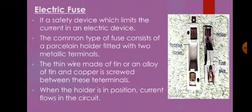Now we will start with the electric fuse. An electric fuse is a safety device which limits the current in an electric circuit. Here in the diagram I have shown a common type of electric fuse. It consists of a porcelain holder fitted with two metallic terminals. A thin wire made of tin or an alloy of tin or copper is screwed between these terminals.